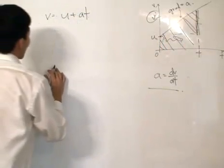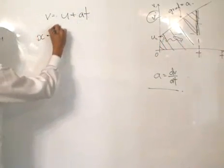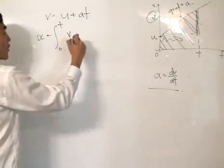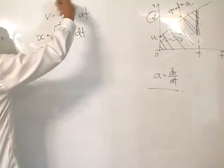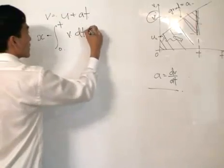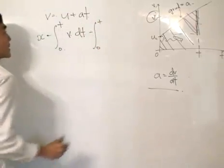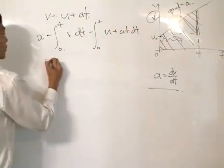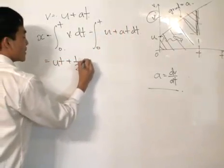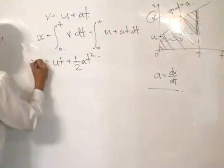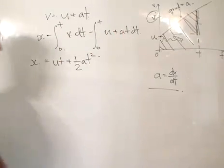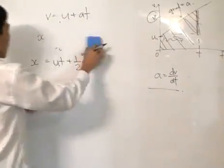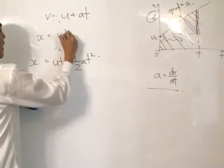Using standard methods of calculus, the displacement equals the integral from time 0 to a certain time t of the velocity function with respect to time. Since v equals u plus at, we integrate to get ut plus ½at². Our second equation of motion under constant acceleration: displacement x = ut + ½at².